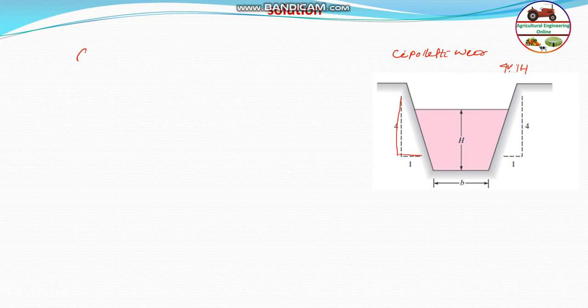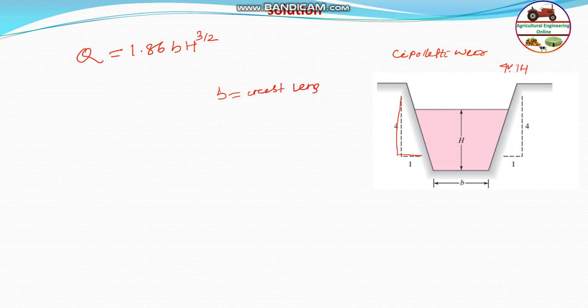Otherwise, the discharge Q, the equation for the discharge is 1.86 B H to the power 3 by 2. Where actually B is the crest length. B is crest length, that is given 1.2 meter. This is B, that is 1.2 meter.